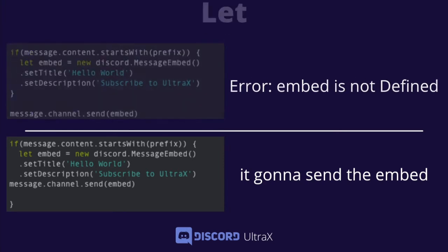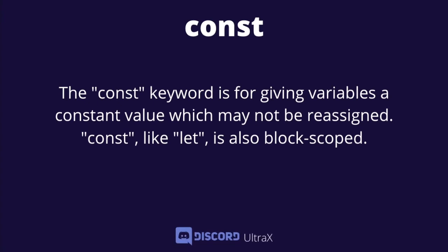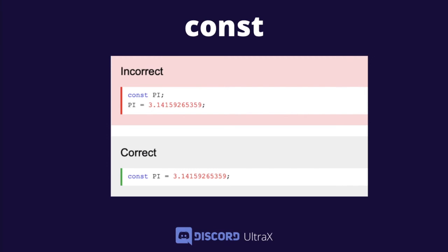Moving on to the const variable. The const keyword is for giving a variable a constant value which may not be reassigned. Const is like let — it is also block-scoped. It cannot be used the same way as let; you cannot type 'const p' without assigning a value — that is incorrect. You must write 'const p = something'. So now you understand it is constant.